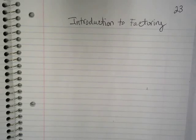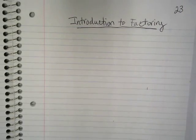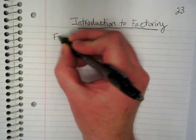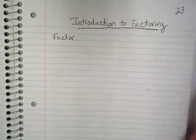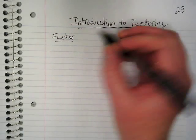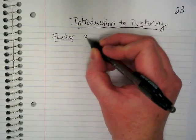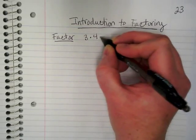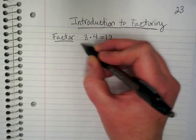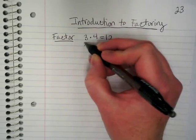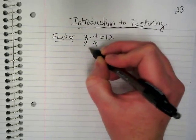On page 23 of your notebooks, we're going to be taking notes today on an introduction to factoring. You may have heard part of that term before, and I'm sure you did when you were first learning multiplication as a vocabulary term. A factor, if you'll remember, is a number that gets multiplied to make a new number. So both 3 and 4 here are factors.